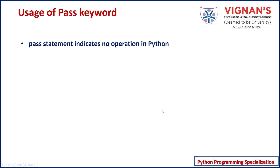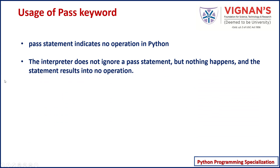When you execute a comment statement, the Python interpreter ignores it. But unlike the comment statement, this pass statement is not ignored by the Python interpreter — even after executing the statement, it results in no operation.